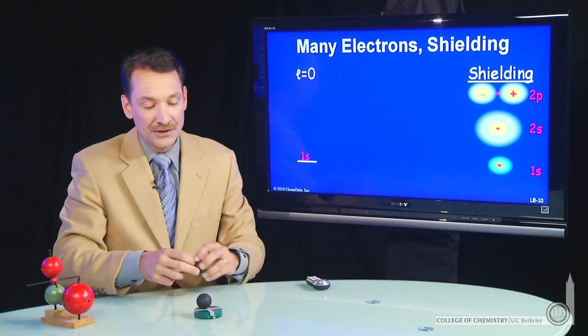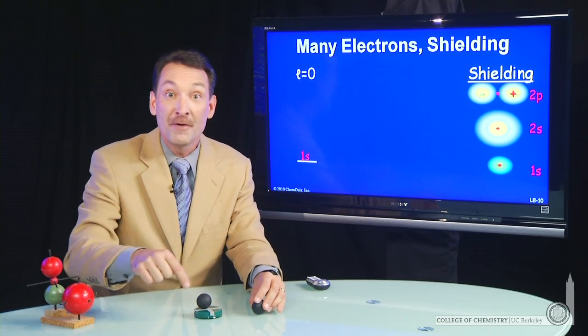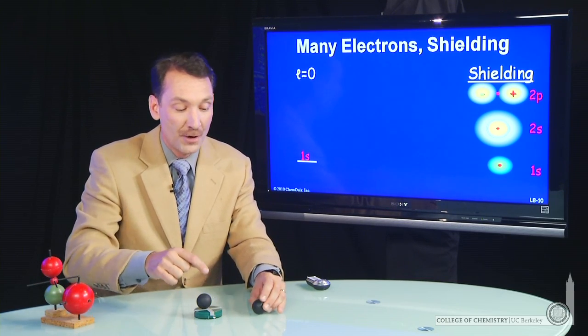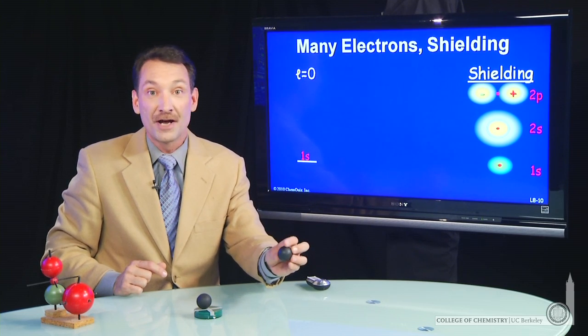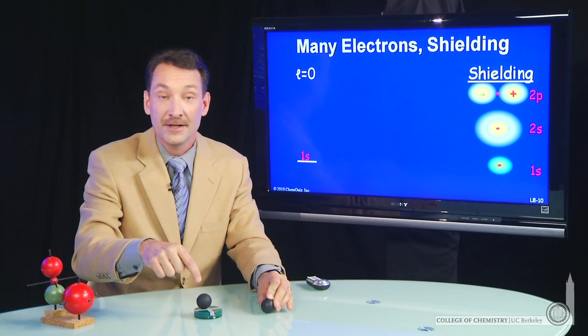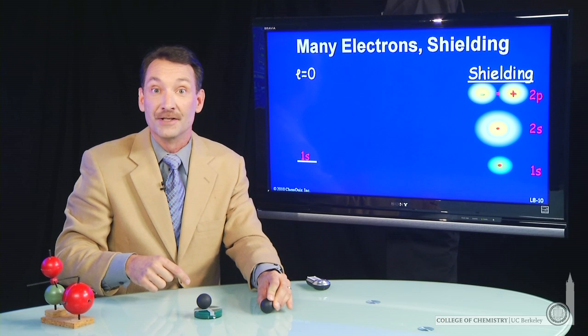Now, what do we mean by shielding? Shielding means I remove some of the effective nuclear charge. So rather than this electron here seeing, say, a full plus 2, if this were a helium nucleus, for instance,